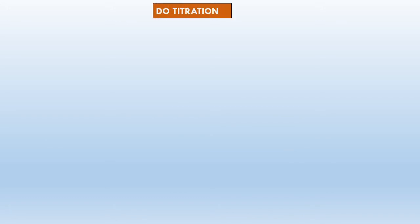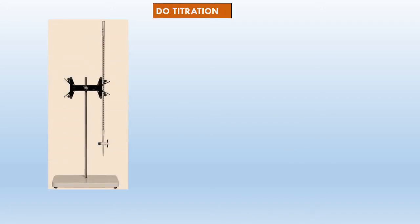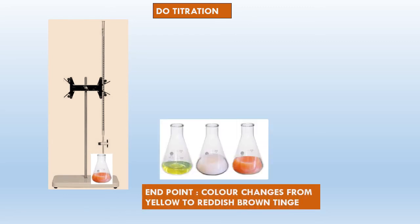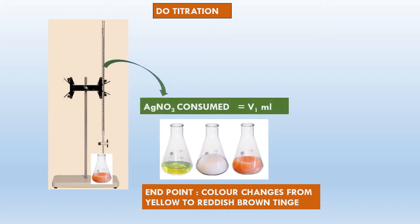Let us do the titration. We have the burette filled with AgNO₃ solution and we are going to titrate now. Upon titration, the color changes to reddish brown tinge — that is your endpoint. Initially the solution is clear yellow, then you have the silver chloride precipitate forming, and then it turns to reddish brown tinge.